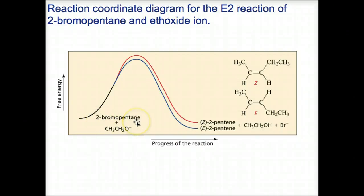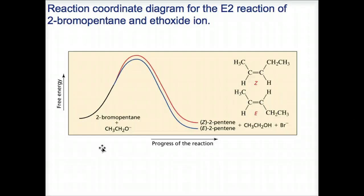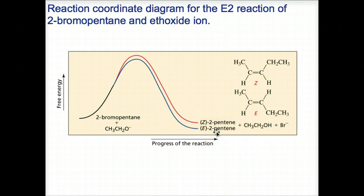2-bromopentane has the alpha carbon to which the bromine is bonded, and then a beta carbon to the left and a second beta carbon to the right. The beta carbon to the left has three protons bonded to it, and the beta carbon to the right has two hydrogens bonded to it. Zaitsev's rule is followed in the E2 reaction where the major product is formed when the proton is removed from the beta carbon with the fewer number of hydrogens. It results in a Z and E form of that product, and the E form is of lower energy because it is more stable, with the two bulky groups across from each other at the double bond.